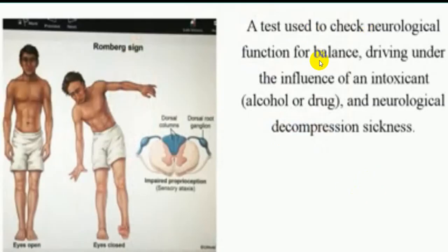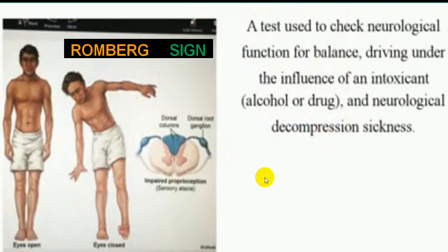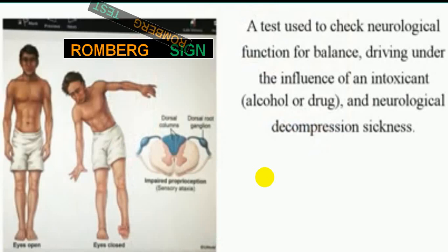The test is to check the neurological function of balance, maintained by the vestibular apparatus, sensory input, and cerebellum — these three things are being checked by the Romberg test. It is also a very common test done if a person is under the effect of alcohol or drugs during driving, or during neurological decompression sickness. The three main structures that take part in maintenance of balance are the cerebellum, vestibular apparatus, and sensory input from the lower limb — the posterior column.